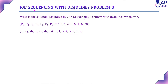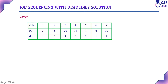What is the solution generated by the job sequencing problem with deadline when n equals 7? Here we have been given 7 jobs with their corresponding profit and deadline values. The first step is to consider the job which earns the maximum profit first and give that job first preference. Next, consider the job with the next maximum profit and give it the next preference. Likewise, we need to order the jobs in decreasing order of profit.